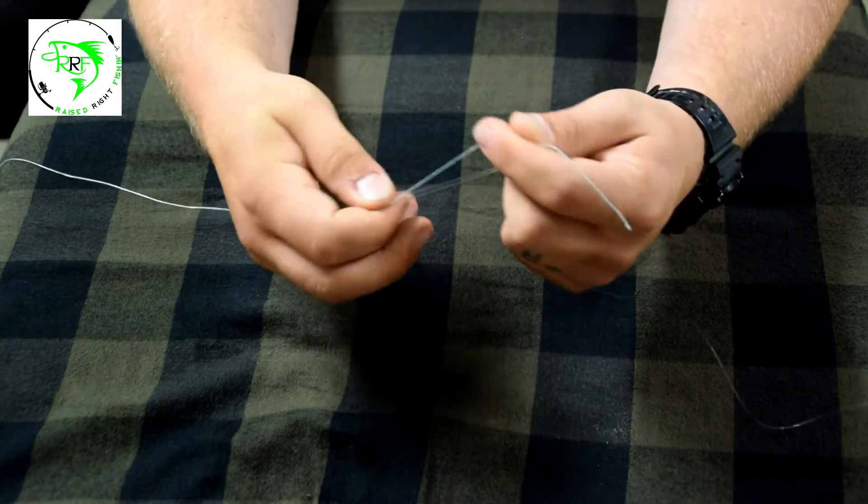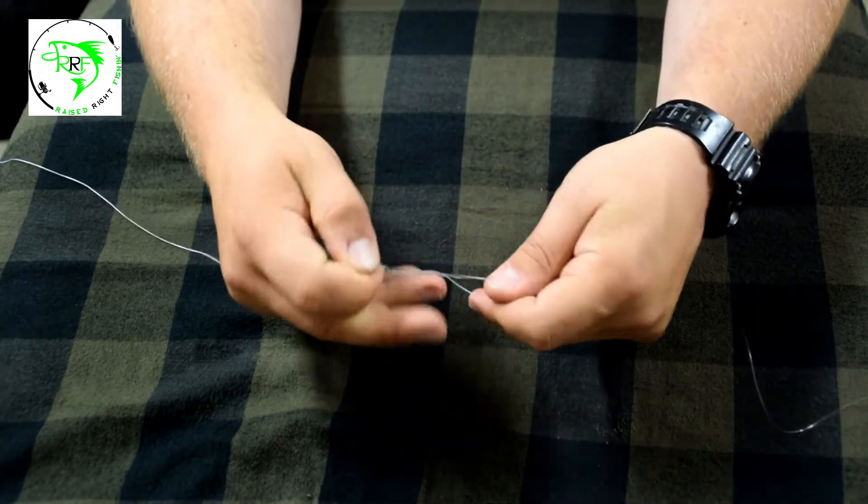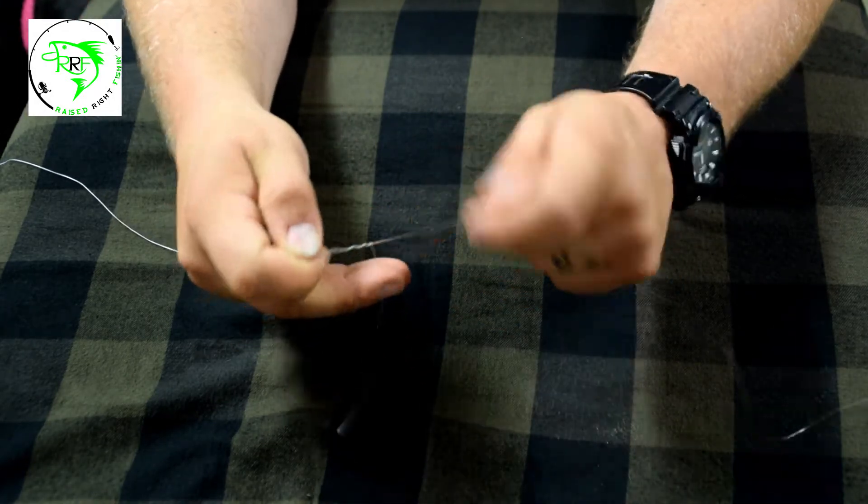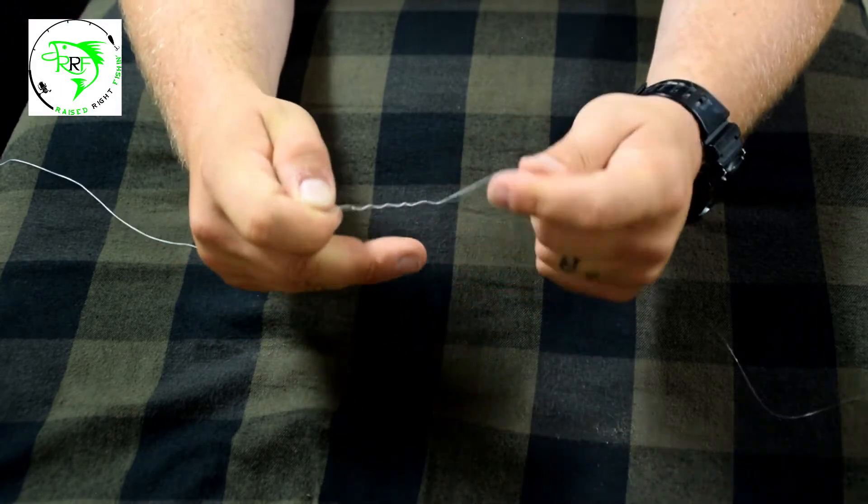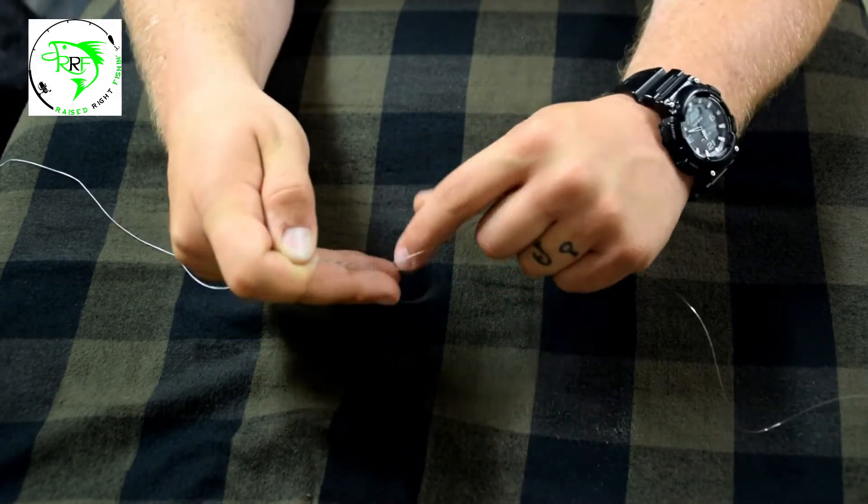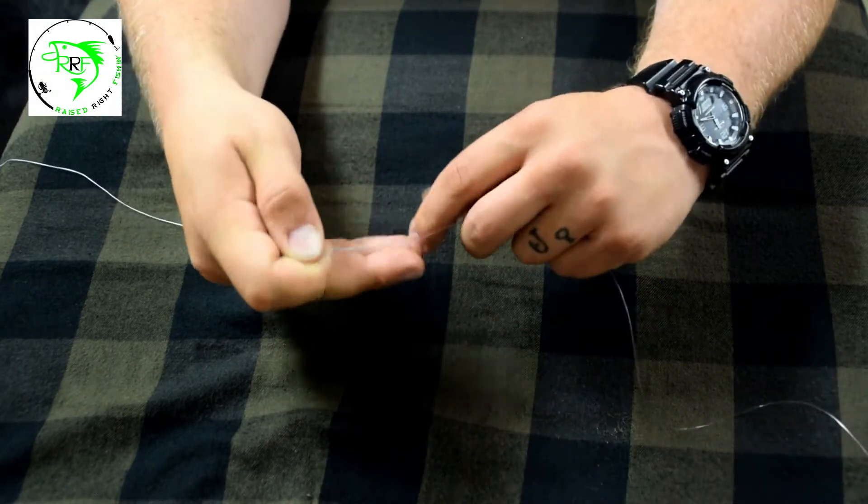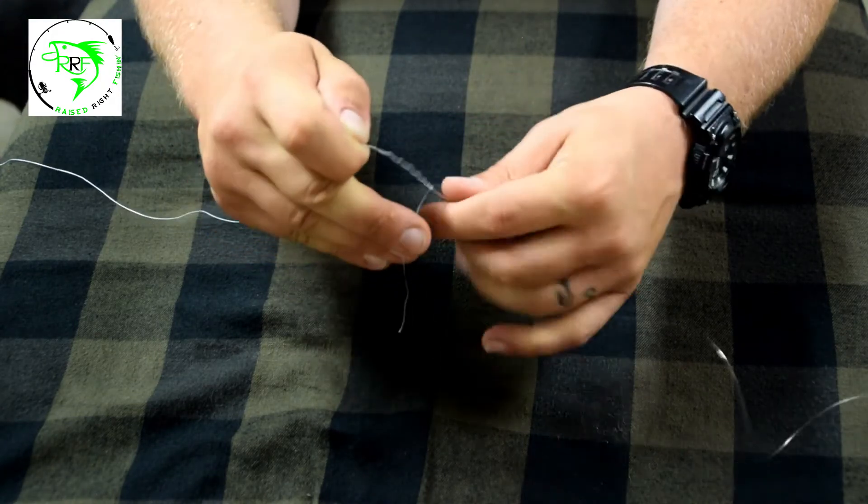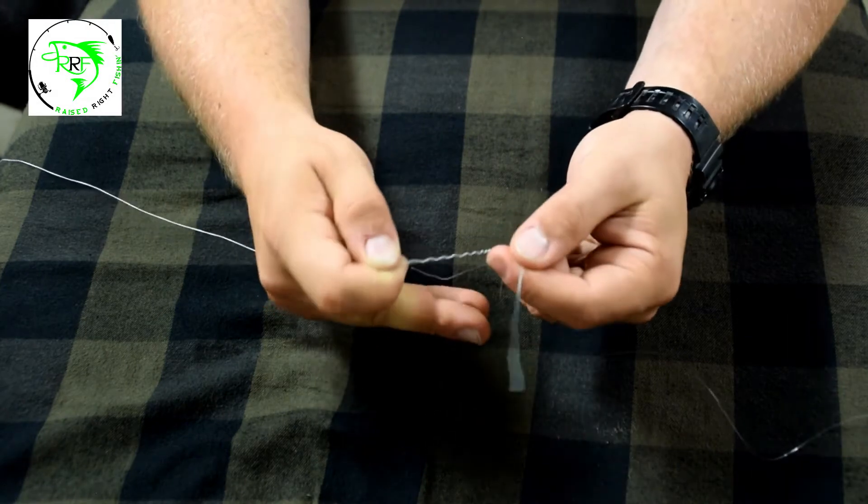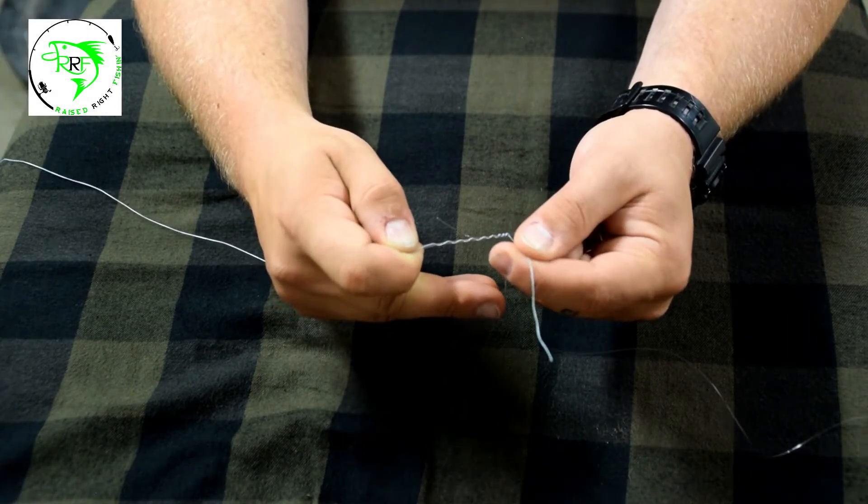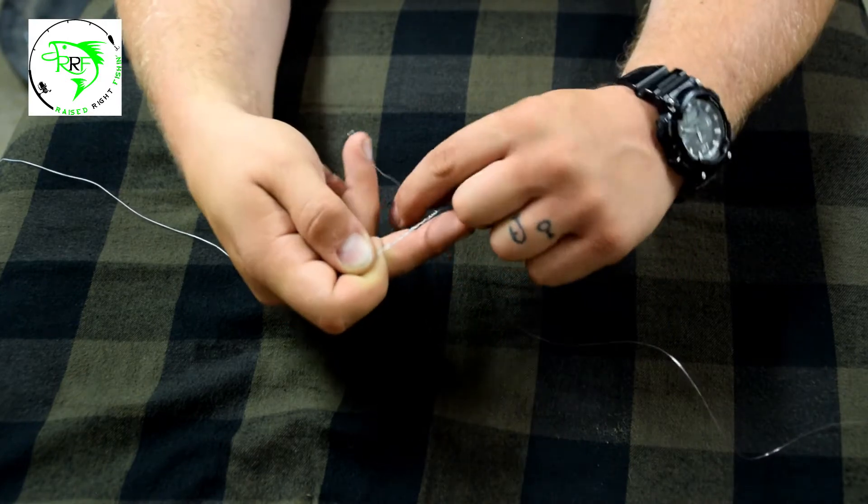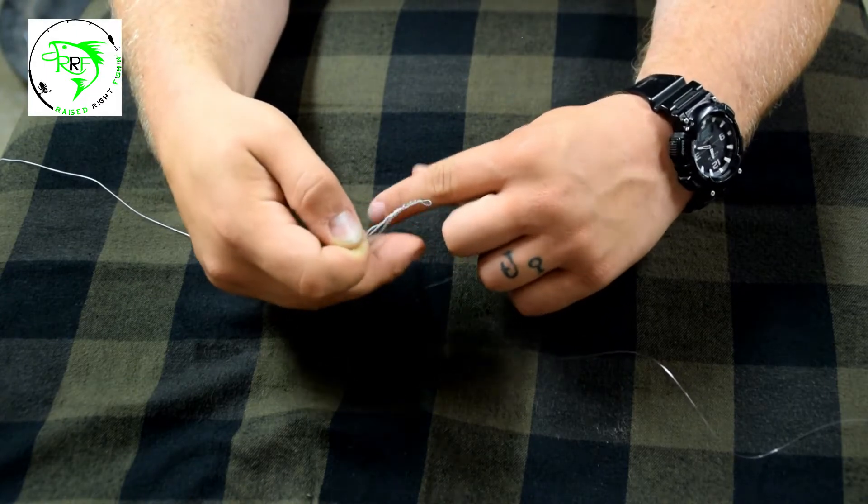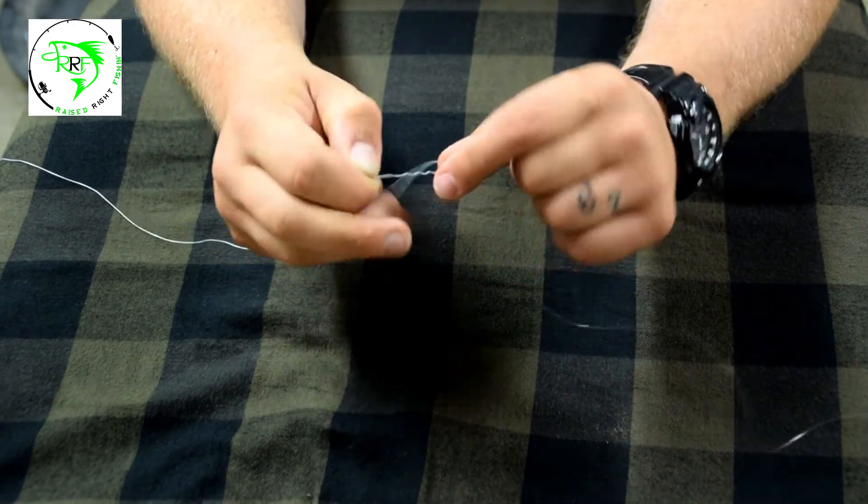While I'm pinching the end of the loop where the braid comes through to help hold it, I'm going to wrap down away from the braid and the loop ten times. This is just the regular Albright knot, but the modified is going to happen when once we're down our ten wraps, now we're going to wrap back up towards the loop. That's where the whole modified turn comes into play.